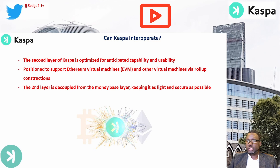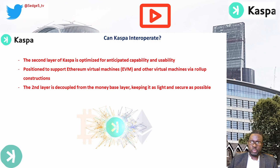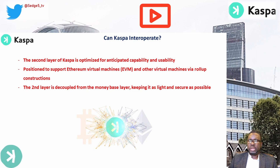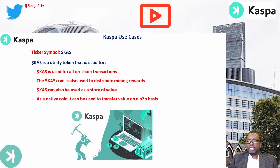On interoperability: the second layer of Casper is optimized for anticipated capability and usability. It is positioned to support Ethereum Virtual Machines (EVM) and other virtual machines via roll-up construction. This layer is decoupled from the base layer, keeping it as light and secure as possible.